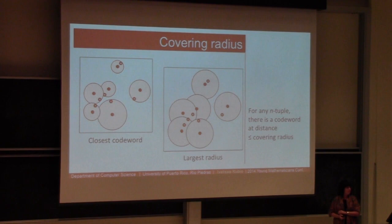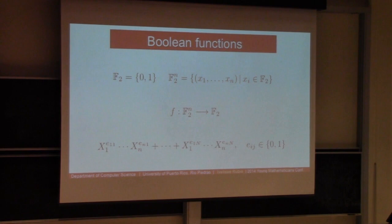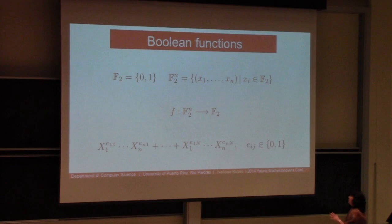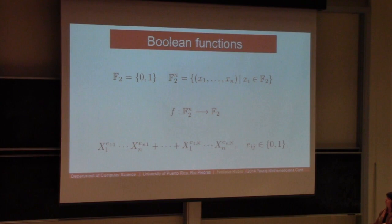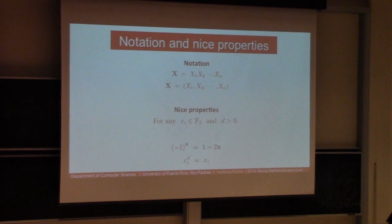Let me give some mathematical preliminaries. We work with Boolean functions: functions that take a vector with binary entries and send it to either 0 or 1. Any Boolean function in n variables can be represented by a polynomial in n variables where coefficients and exponents are equal to 1. I'll be changing between talking about Boolean functions and binary polynomials — they are all the same here.